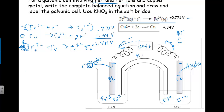For the salt bridge: copper is being consumed and becoming Cu²⁺, making that side more positive, so nitrate ions flow into the copper (anode) side to neutralize the positive charge. Potassium ions flow the other way toward the cathode side.